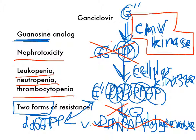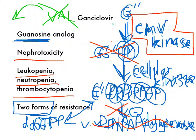One last thing about ganciclovir: there's another drug called valganciclovir, which is a prodrug with good oral bioavailability. When you take it, the liver pulls off the 'val' and converts it to ganciclovir. So valganciclovir is a prodrug — you take it orally, the liver processes it, and you get ganciclovir. The key point is that valganciclovir has a higher oral bioavailability.